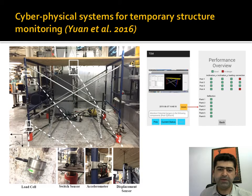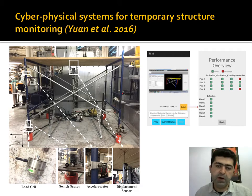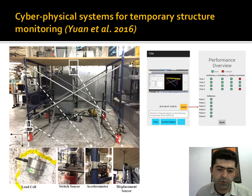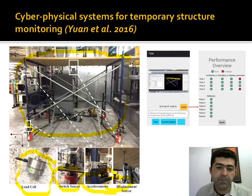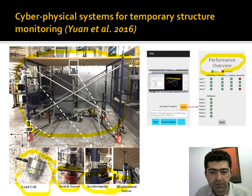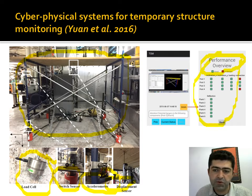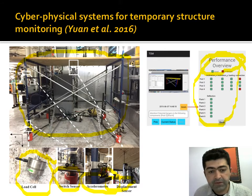Yohan and others implemented a study proposing a solution for temporary structural monitoring. Several sensors were deployed — including load cells, switch sensors, displacement sensors, and accelerometers — to monitor the conditional status of temporary scaffolding structures. They developed a system that integrates this information via cloud services, and the current status of the structure can be monitored through mobile devices using these applications.